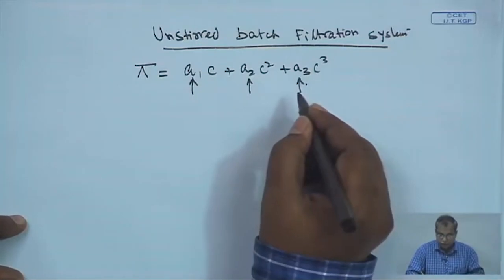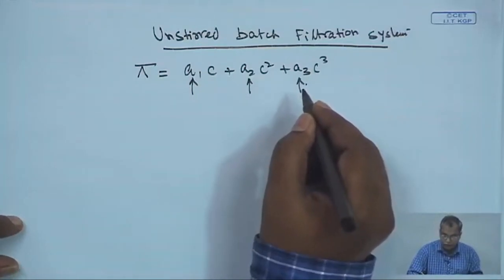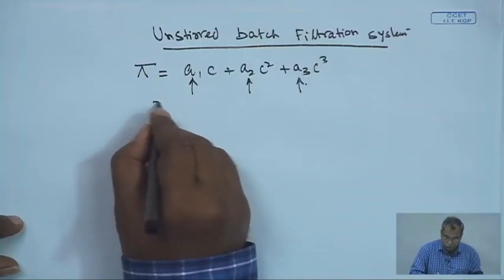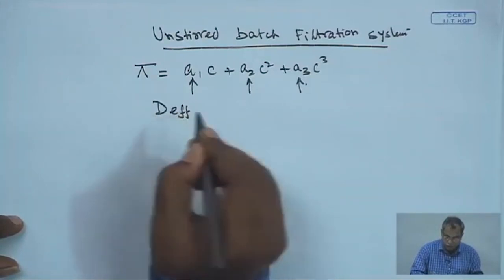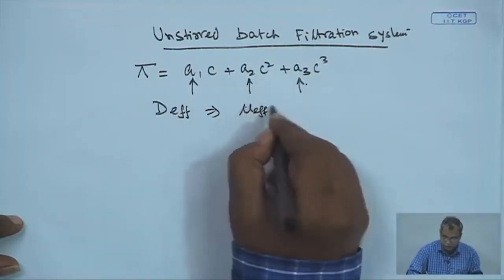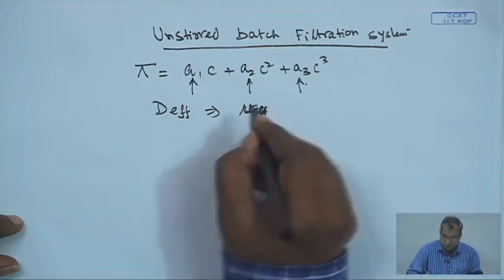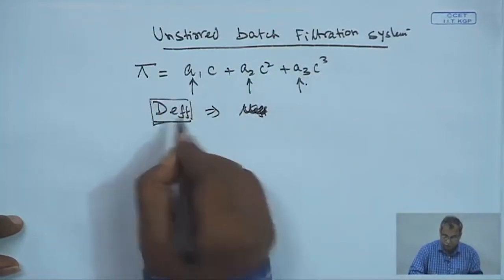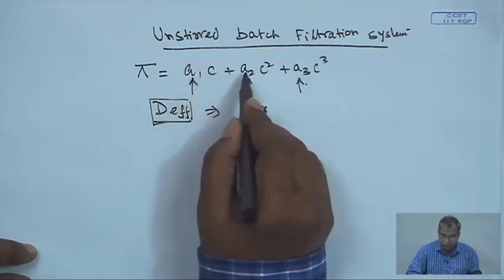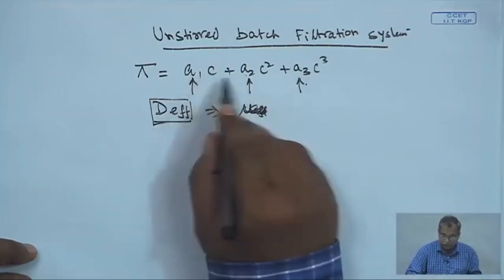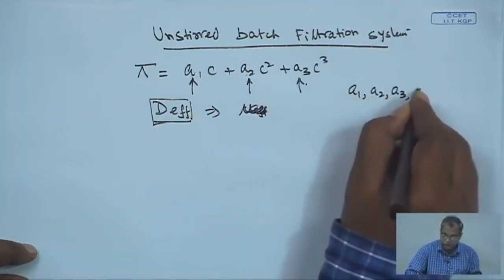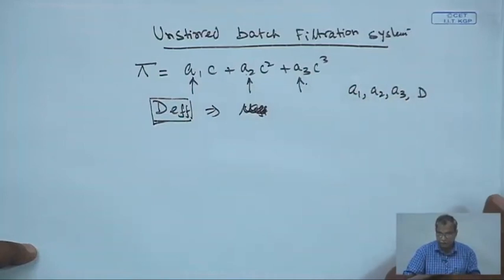We do not know the values of a1, a2, a3. Even if you can know them if you have an accurate osmometer, if you do not know the value of effective diffusivity — effective viscosity can be measured of course, but the diffusivity value cannot be known. So in a typical system you will be having 4 unknowns: the osmotic coefficients a1, a2, a3, and effective diffusivity of the system.